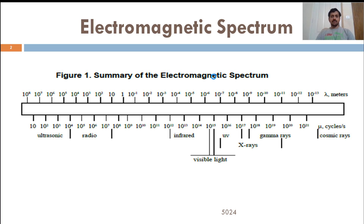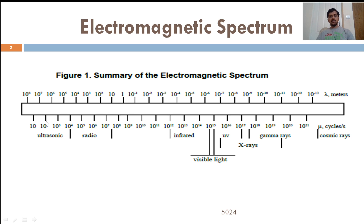Today we will look at the electromagnetic spectrum of radiation. On the upper end of the scale you can see the wavelength in meters, and on the lower side you can see the frequency of different waves in cycles per second. The visible light region is shown, with infrared (IR) at higher wavelengths and ultraviolet at lower wavelengths.